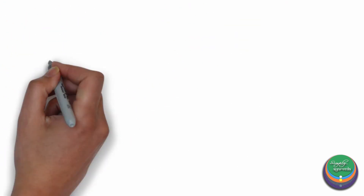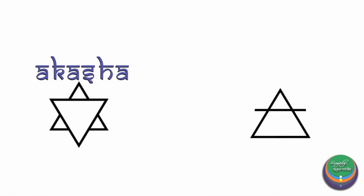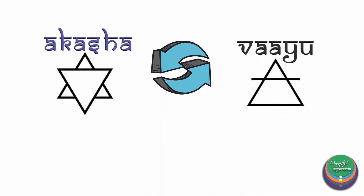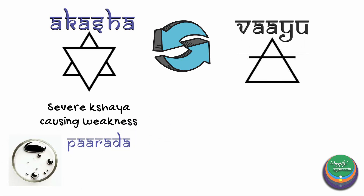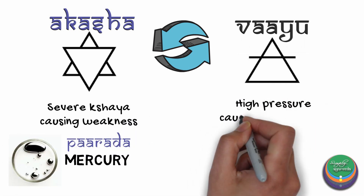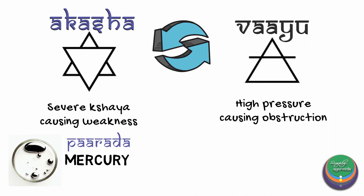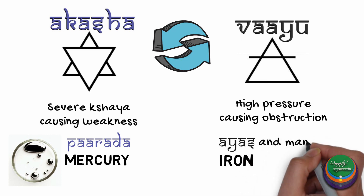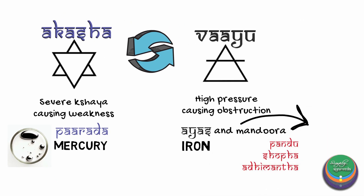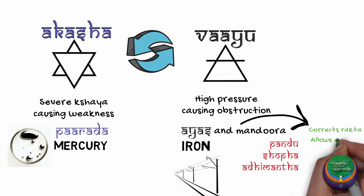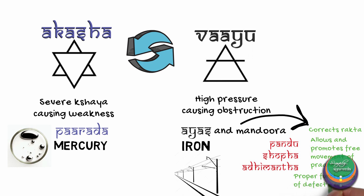Whenever Akasha is delineated, it causes defects of Vayu and vice versa. Due to severe Kshaya causing weakness — Akasha — where Parada is the medicine. Due to high pressure causing obstruction — Vayu — where Ayas or Iron is the medicine. This is the reason why Ayas and Mandura are the choice of medicine in pathologies like Pandu, Shofa, Adhimanta, and other renal conditions. It is not just to correct the Rakta Dhatu, but as basic science says, iron is a good conductor — it allows and promotes free movement of Prana in the Shareera, re-establishing proper functioning of defected organs.